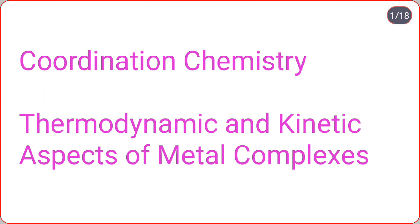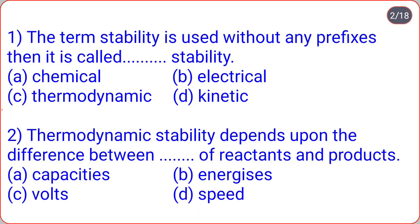Let us start MCQs from thermodynamic and kinetic aspects of metal complexes. First question: the term stability is used without any prefixes — what is it called? Options: chemical, electrical, thermodynamic, kinetic. The correct answer is thermodynamic stability, that is option C.